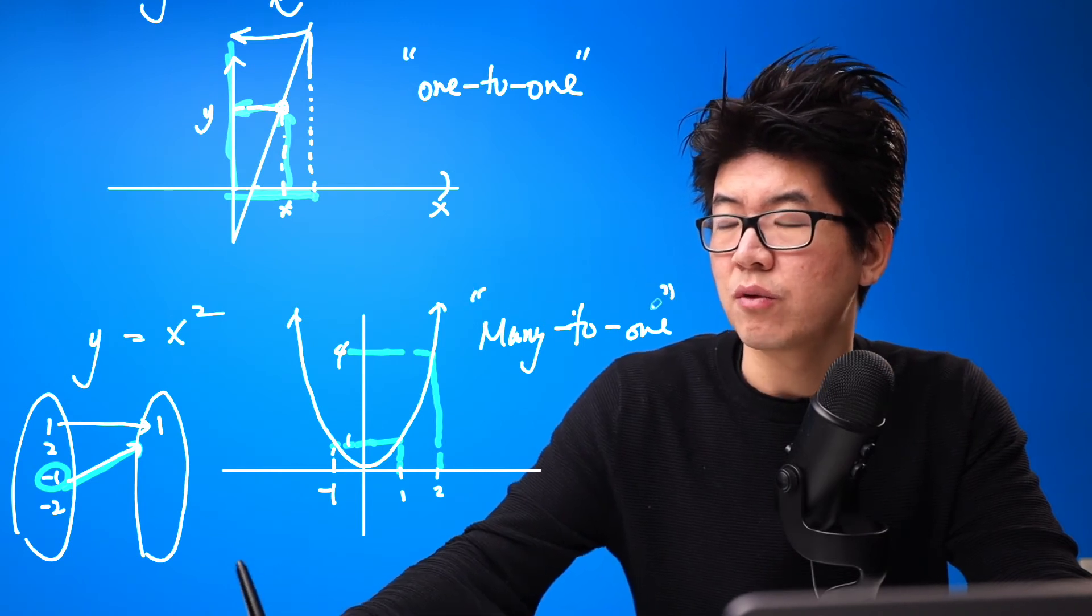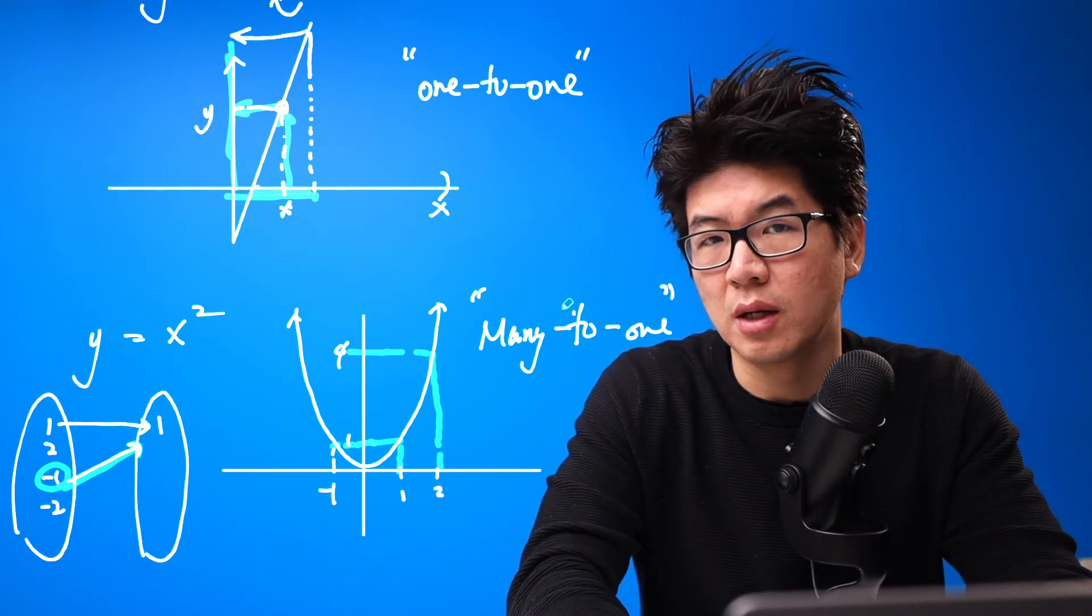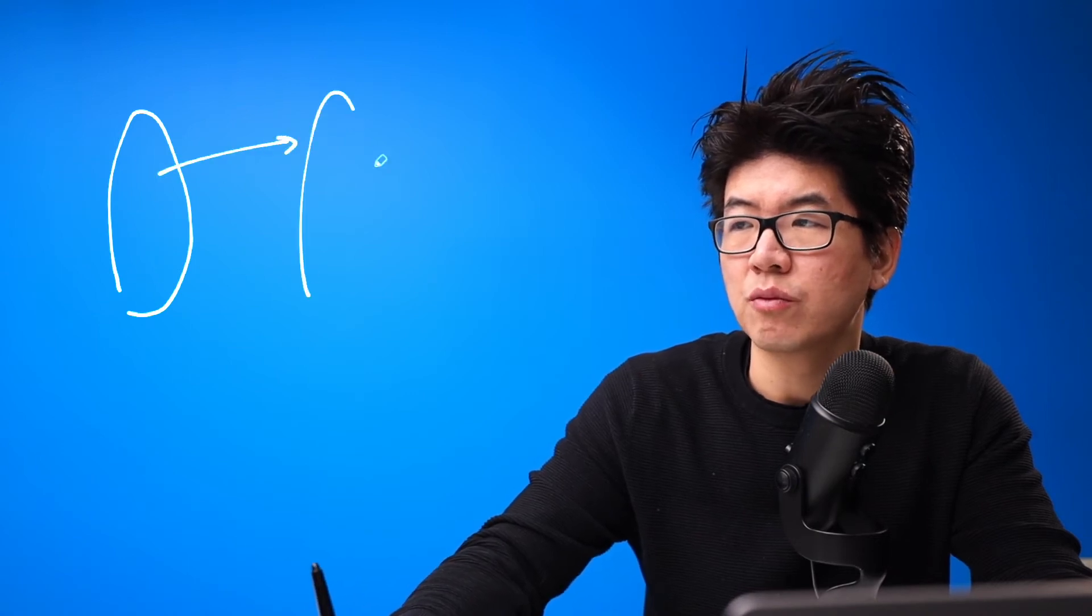These terminologies are quite important for us to quickly talk about more advanced features of functions later. Before I go into more advanced examples, let me finish with a story. Why is it important that we have something called a function where we assign each of the input one result? Why is it important that we only assign it to one?